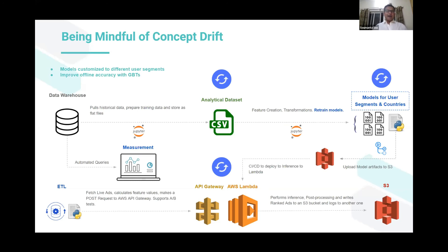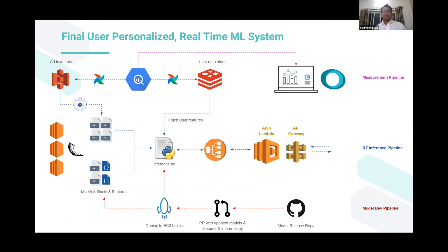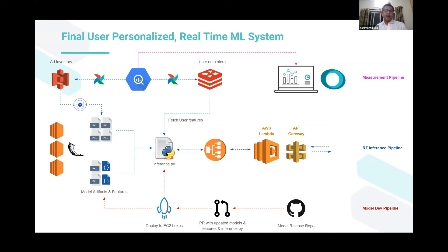Once we went through those multiple steps and understood the business and users better, this helped us transition to a real-time user personalized system. In the model development pipeline, we push code, model artifacts, and model features to a model release repo. A pull request is made, it goes through a series of tests, and once all tests have been cleared, we deploy via a deploy board, which takes the model artifacts and features and uploads them to all EC2 boxes, doing the same for our inference script.